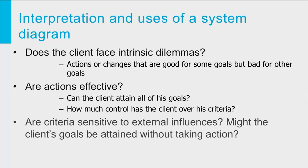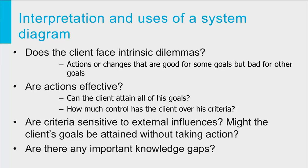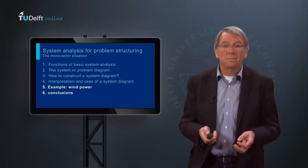Third, you may explore the extent to which the criteria are sensitive to external influences. How uncertain is the development of the contextual factors, and to what extent may such developments seriously affect system behavior and outcomes? Might there be future situations in which the client's goals are attained without taking action? You can learn more about this by viewing the tutorial on future explanations. Finally, look for critical knowledge gaps — for example, some of the relevant causal relations may be very uncertain, and this indicates a need for further research.